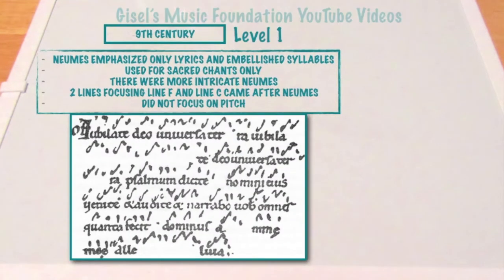During the 10th century, musicians would use only two lines which focused on C and F. During that time there was no absolute pitch, so they really relied on each other to determine where they were going to start in their music.